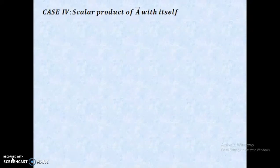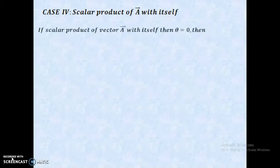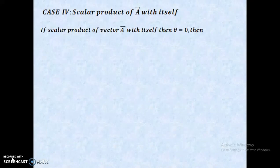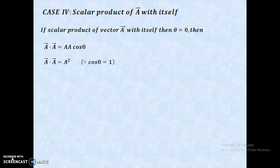Scalar product of a vector with itself: the angle between them, theta, equals 0. Therefore, A-vector dot A-vector equals A · A · cos(0), which gives A-vector dot A-vector equals A squared, that is, the magnitude squared.